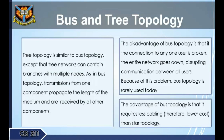Tree topology is similar to bus topology except that tree networks can contain branches with multiple nodes. As in bus topology, transmissions from one component propagate the length of the medium and are received by all other components. The disadvantage of bus topology is that if the connection to any one user is broken, the entire network goes down, disrupting communication between all users. Because of this problem, bus topology is rarely used today.